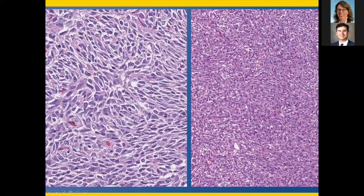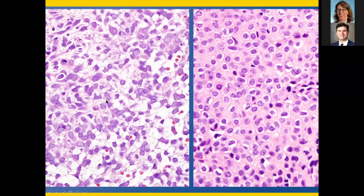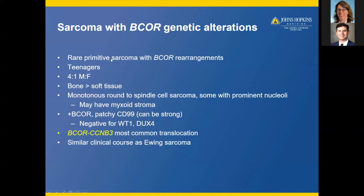Here is another case — a monotonous spindle to round cell neoplasm raising the possibility of synovial sarcoma, with some areas resembling CIC-DUX4 with myxoid stroma and round cells with prominent cytoplasmic membranes. This is a sarcoma with BCOR genetic alterations — a rare primitive sarcoma, often in teenagers, more often males, more often in bone. It is a monotonous round to spindle cell sarcoma with somewhat prominent nucleoli and possible myxoid stroma. BCOR IHC is helpful. CD99 is typically patchy but can be strong. It is negative for WT1 and DUX4 immunostains. The most common translocation involves CCNB3. It seems to have a similar clinical course to Ewing's sarcoma, much better than CIC-DUX4.